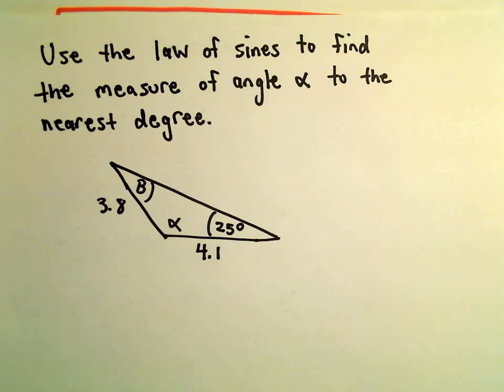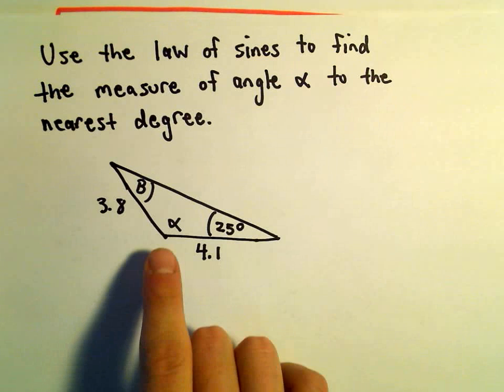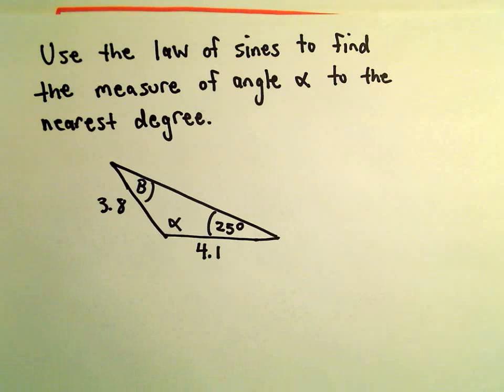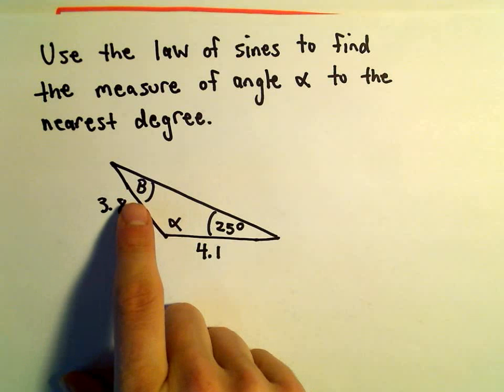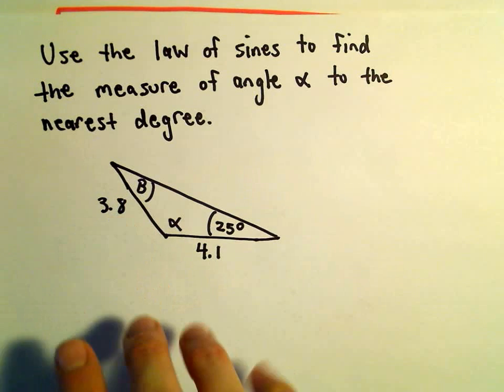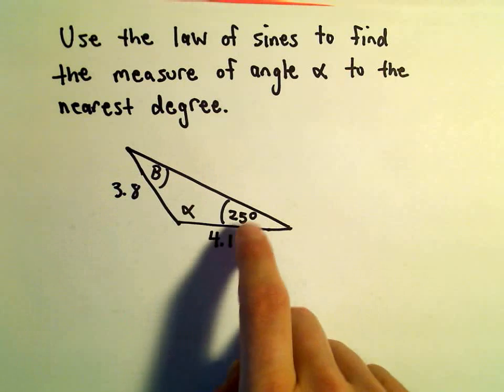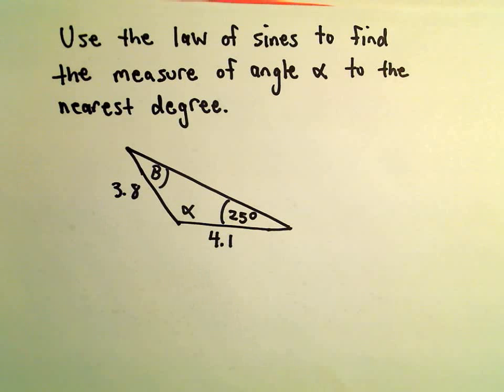And we're not going to use the law of sines to find the angle alpha directly. What we're first going to do is actually find the angle beta, or b here. We're going to find the measure of that angle, and then we'll just use the fact that they all add up to 180.